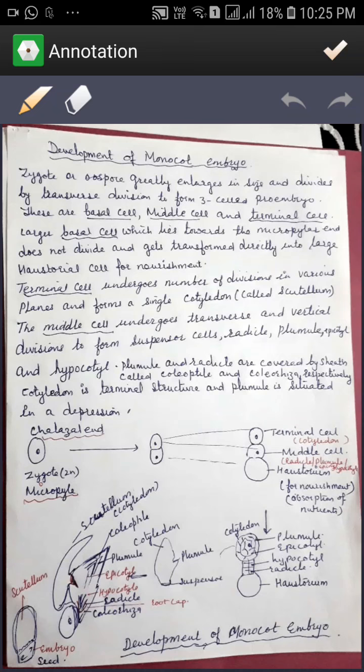Today I will discuss development of monocot embryo. The zygote, when formed, enlarges in size and divides by transverse division to form a three-celled proembryo.